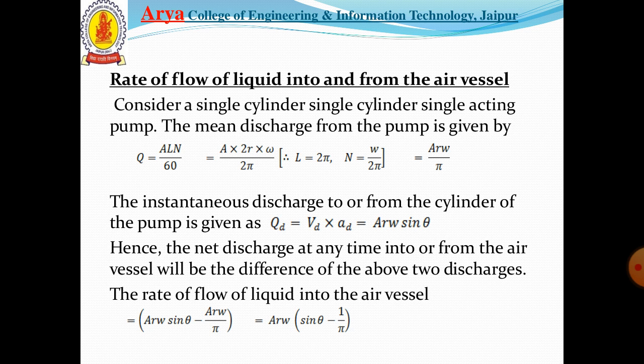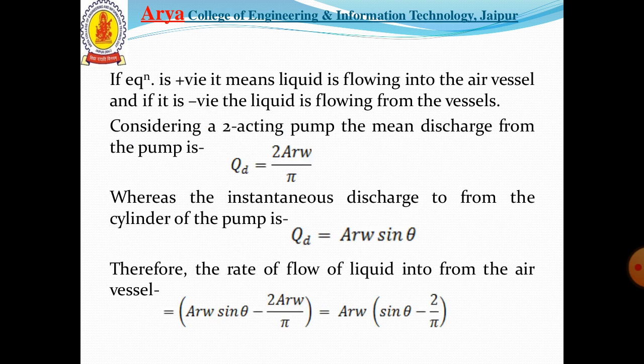If the equation yields a positive value, it means the liquid is flowing into the air vessel; if it yields a negative value, the liquid is flowing out of the vessel. Considering a double acting pump, the mean discharge from the pump is 2A·r·ω/π.